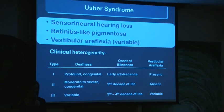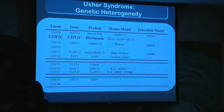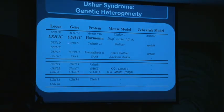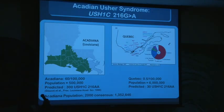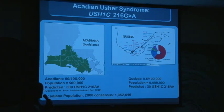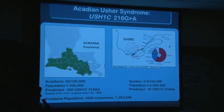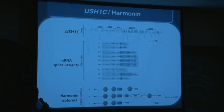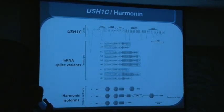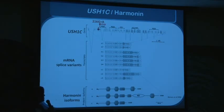Since Kirsten gave a great overview of Usher syndrome, I'll jump right to USH1C for harmonin. We are looking at a particular mutation — the Acadian-Usher syndrome mutation, a 216G to A point mutation in the USH1C gene. It's called the Acadian mutation because it's found in the Acadian population of Louisiana and Quebec, where it accounts for all cases of Usher syndrome. USH1C is a very large gene with many different splicing variants and protein isoforms. This 216G to A mutation occurs in exon 3 and results in mis-splicing, producing a frameshift and a stop codon in exon 4.